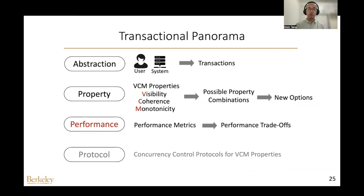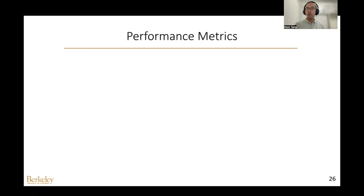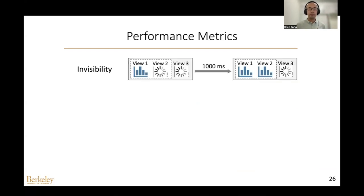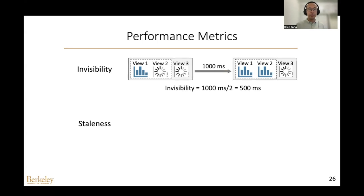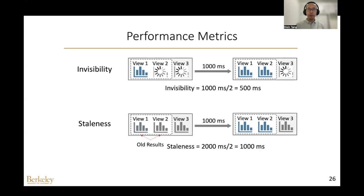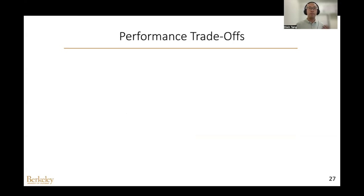Next I will show the performance trade-offs across different options. We define two performance metrics. The first is invisibility, which represents the average time when a visualization in the viewport is invisible to the user — for example, if one visualization is invisible for 1000 milliseconds and there are two visualizations in the viewport, the invisibility is 500 milliseconds. The second metric is staleness, which represents the average time when a visualization result in the viewport does not belong to the latest version — in this example, its staleness is 1000 milliseconds because both results are old.